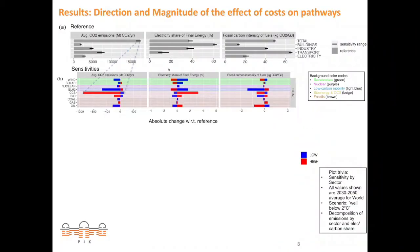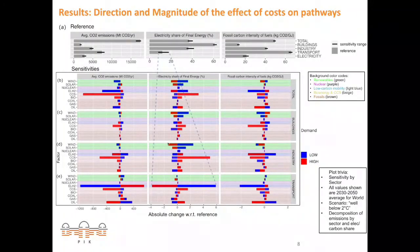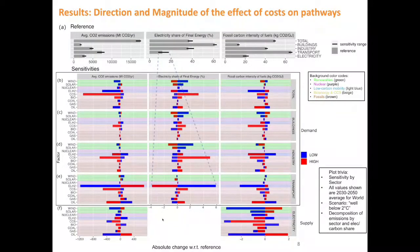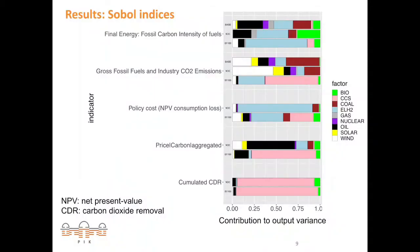Once we have the total values, we can also look at the breakdown into sectors, first of the demand side and then adding also the supply side, looking at electricity. The direction and magnitude of the effect of each factor is shown. To quantify the overall effect, we compute the Sobol indices and also the Borgonovo indices, with which we can have an overview of the most important factors in this sensitivity analysis.